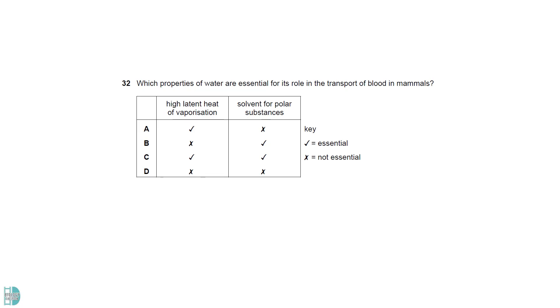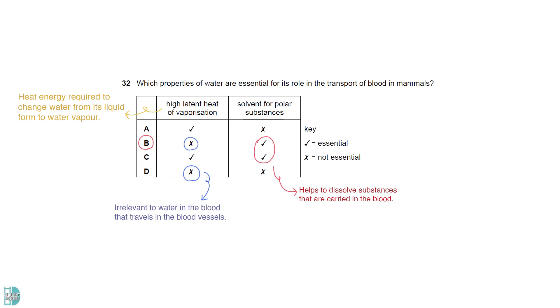The latent heat of vaporization is the heat energy required to change water from its liquid form to water vapor. When water is in the blood, traveling in the blood vessels, this feature is irrelevant. Its dissolving ability, however, is essential. This helps to dissolve many different substances that must be carried in the blood.